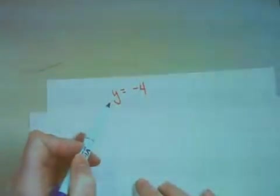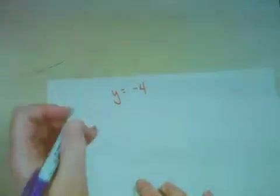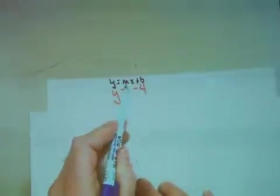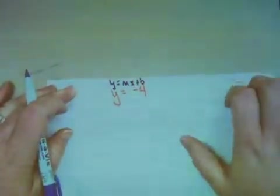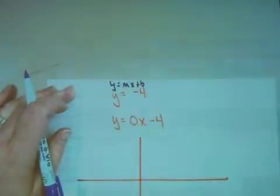Let's graph the equation y equals negative 4. Remember, this should be y equals mx plus b. Does the negative 4 represent the m, the x, or the b? That's right, it represents the b.